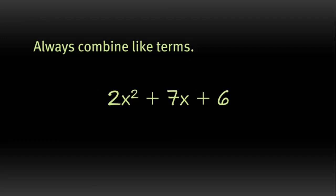So when we combine our like terms, we're going to combine x squareds with x squareds, x's with x's, constants with constants, and so on.